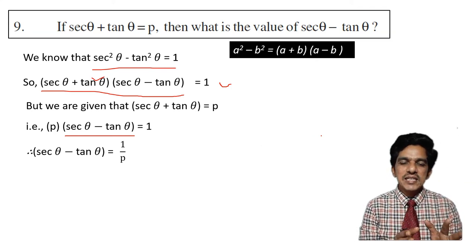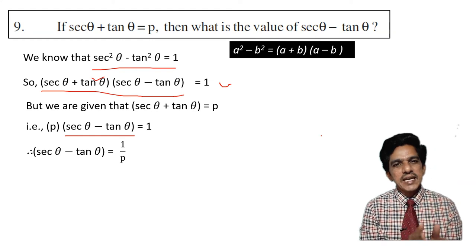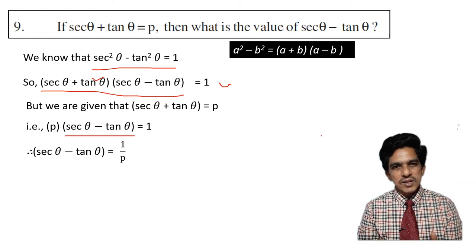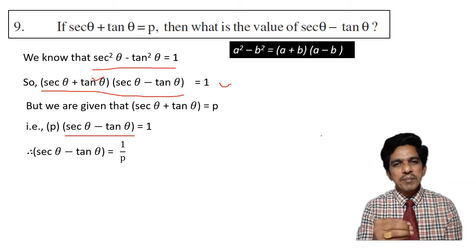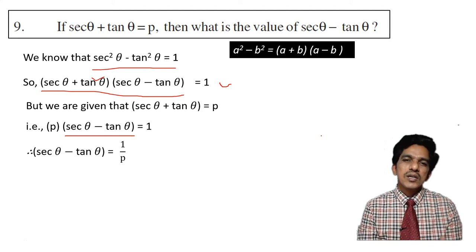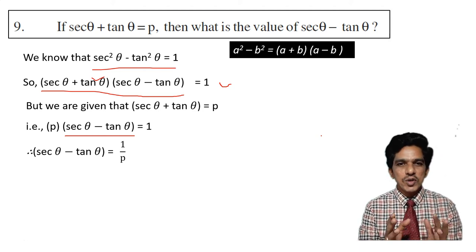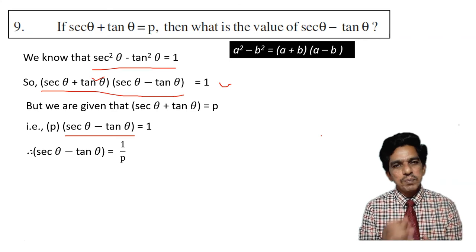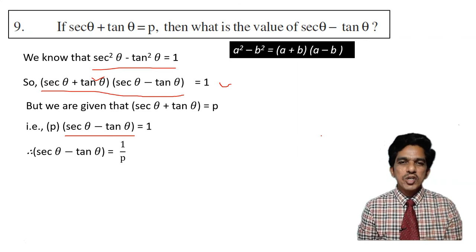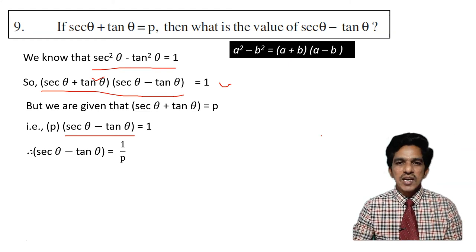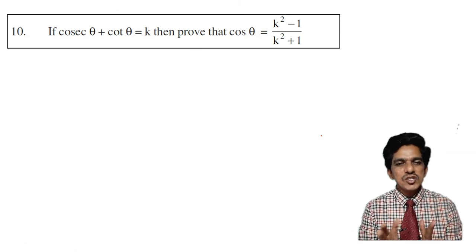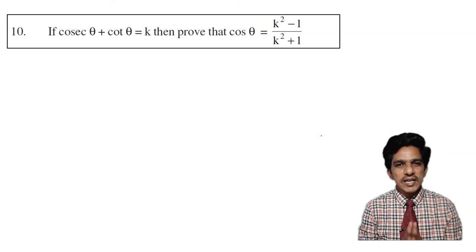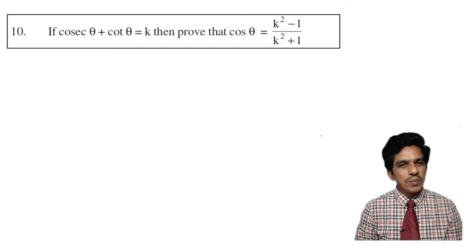So if secant theta plus tan theta equals p, then secant theta minus tan theta equals 1 by p. For example, if secant theta plus tan theta equals 5, then secant theta minus tan theta equals 1 by 5. Similarly, if cosecant theta minus cot theta equals 10, then cosecant theta plus cot theta equals 1 by 10. Now question number 10: If cosecant theta plus cot theta equals k, prove that cos theta equals k square minus 1 divided by k square plus 1.